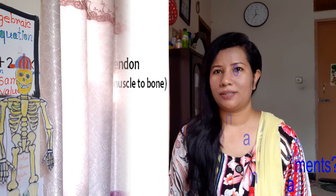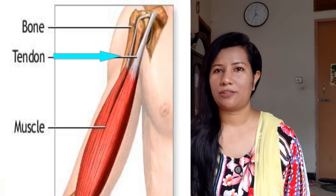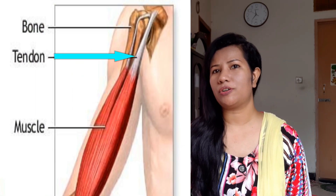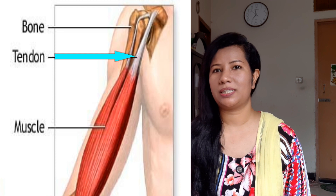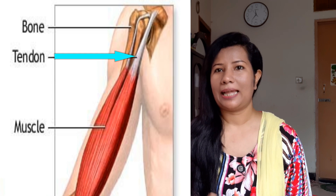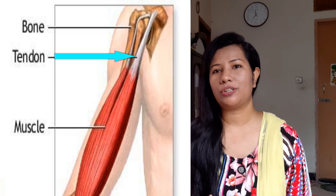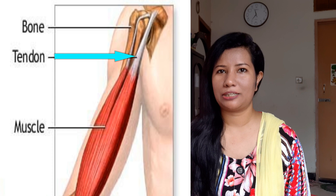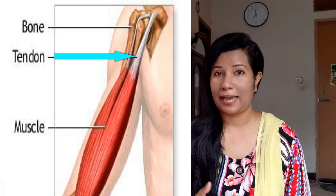So what are tendons? The terminal portion of muscles forms a rope-like strong structure which is attached to the bones, and this strong terminal portion of the muscle is called a tendon.